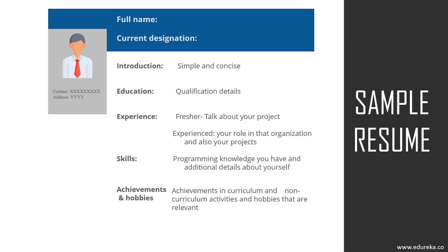Next, specify the skills you have — first the ones you're comfortable being asked about, and mention your programming knowledge. Specify the tools you've worked on, as this increases your rate of selection. Be very confident when asked about any skill you've mentioned. After this, specify your achievements and hobbies, but do not mention too many — just a few that are relevant and that you are confident about.